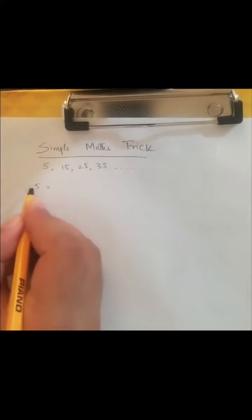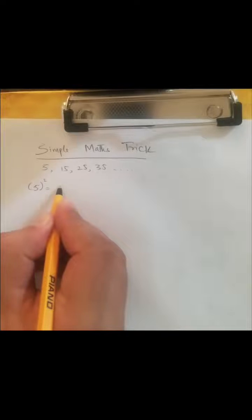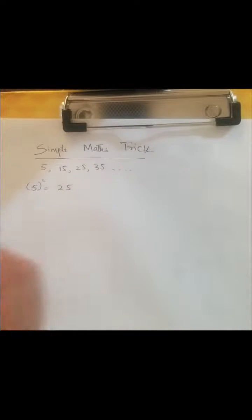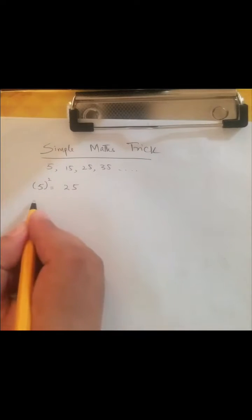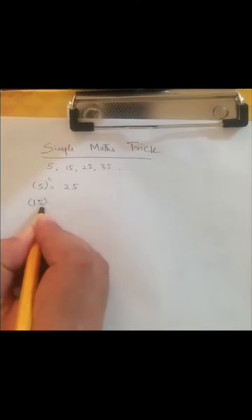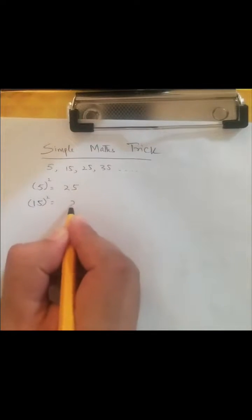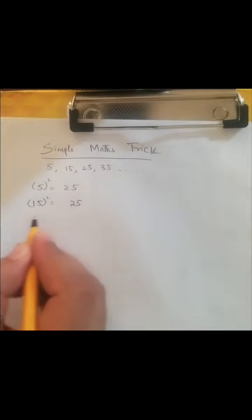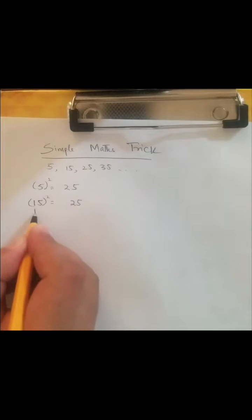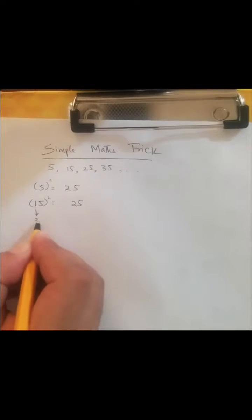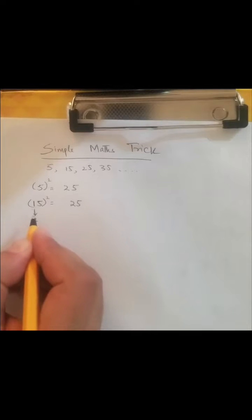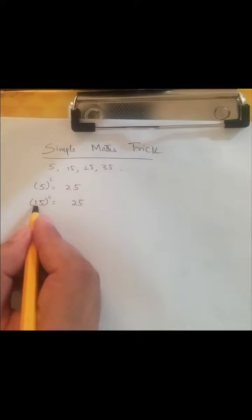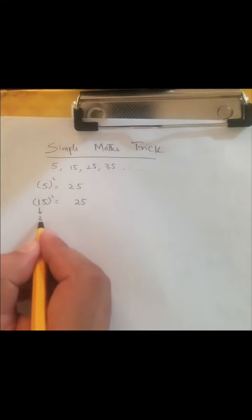5 is a simple number. We can easily take the square of 5, which is 25. Now the square of 15: first write 25, then the next number after 1 is 2, so take the multiple of this number with the next number.